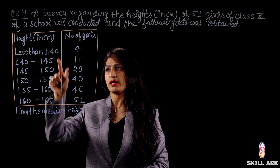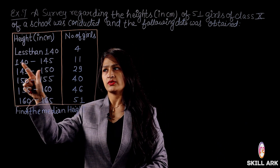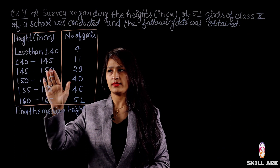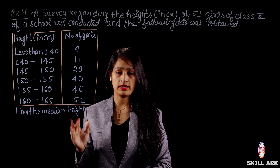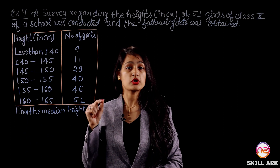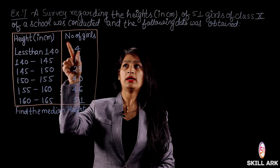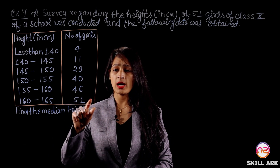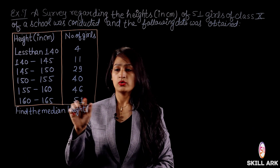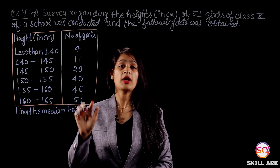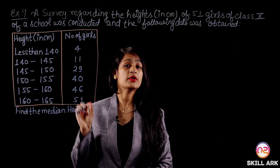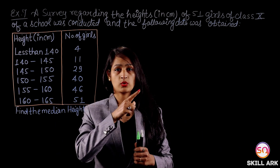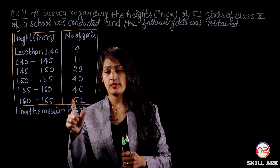We can convert this to class intervals: 140 to 145, 145 to 150, and so on. The total number of girls in the question is 51. If you see the cumulative values given — 4, 11, 29, 40, 46, 51 — and if you total the differences, you get 51. Because the last term is 51, which equals the total number of girls given in the question.